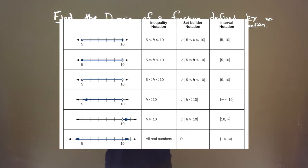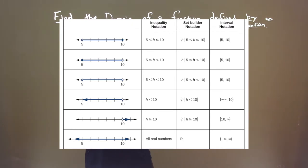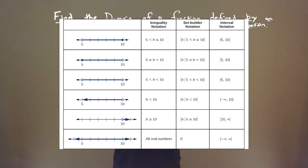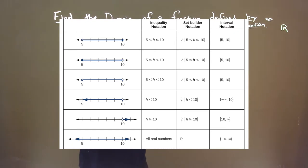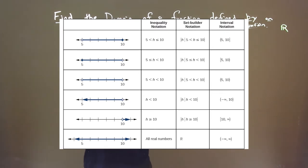The last one to note is all real numbers. The number line goes both directions from negative infinity to positive infinity. The simpler notation is that R symbol — the double bar R. In interval notation, it's from negative infinity to positive infinity.